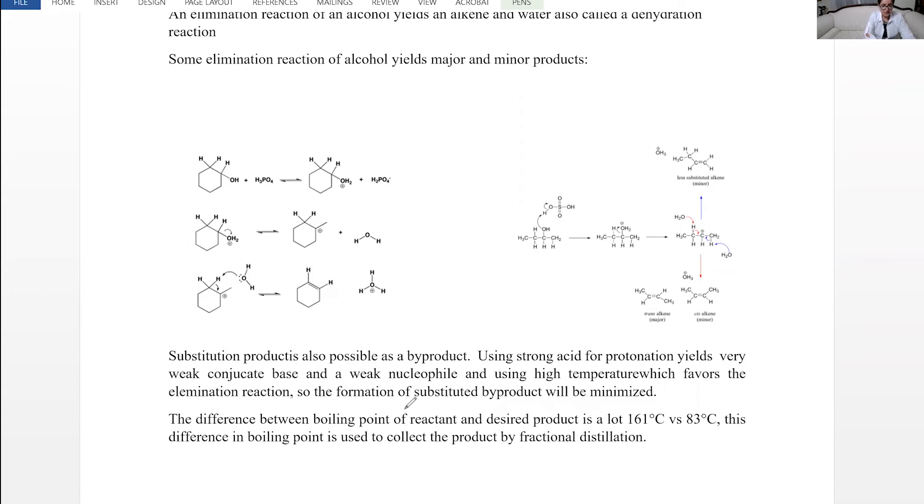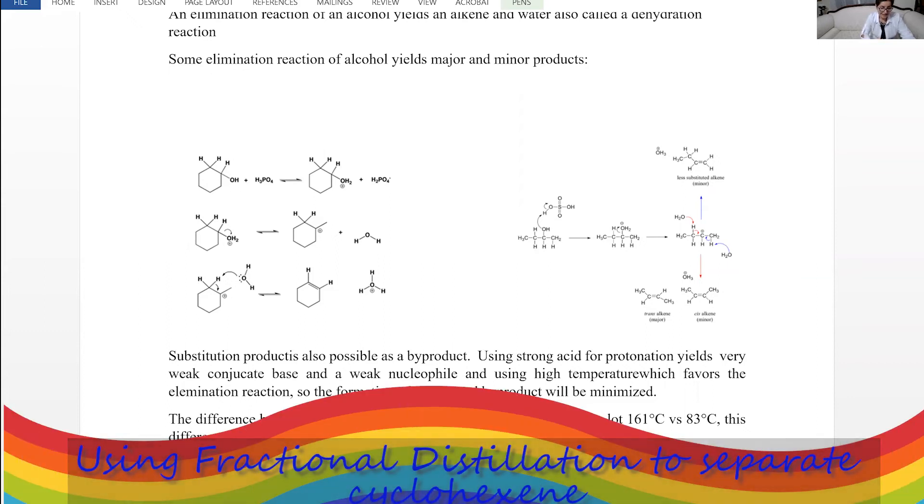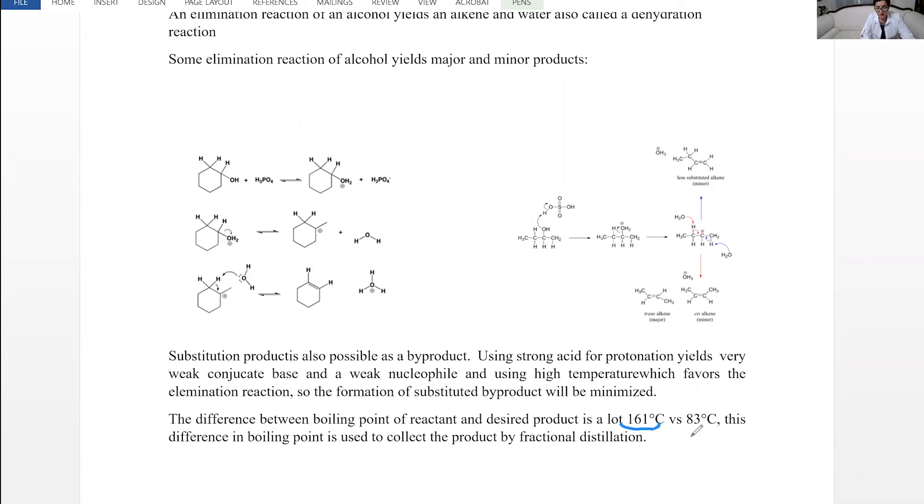If you look at the reaction in the lab manual, I have the boiling point of the reactant and the product. The reactant cyclohexanol boils at 161°C but the product at 83°C. These two are significantly different, so we could use simple distillation. But to make sure that separation is most efficient we are using fractional distillation. Because the product has lower boiling point compared to reactant, we can remove the product by distillation as it is forming so the reversible reaction does not kick in.